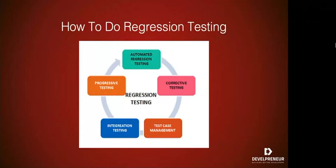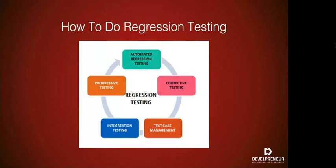Sixth, depending upon the particular application and nature of the code changes, you may decide to treat non-functional tests as low priority for regression testing. However, especially when dealing with customer data that should be kept secure, consider prioritizing security testing as high or even critical. Seventh, temporarily remove any test cases from the regression suite that will fail due to existing defects which have not yet been addressed. This is typically done when you know you've made it to regression testing but know there are still bugs that will impact certain test cases.